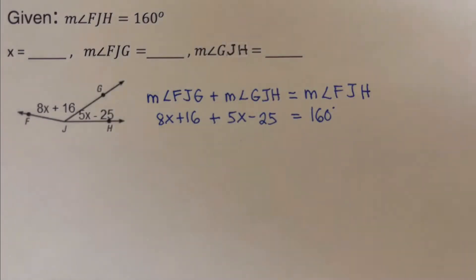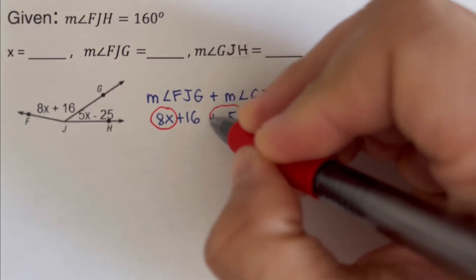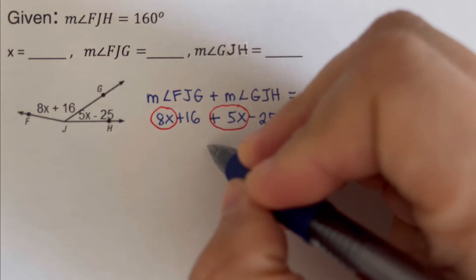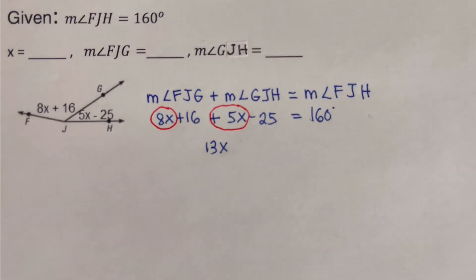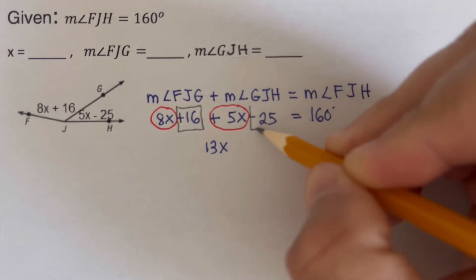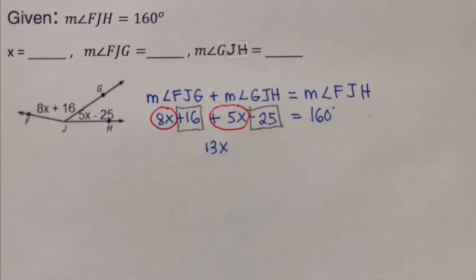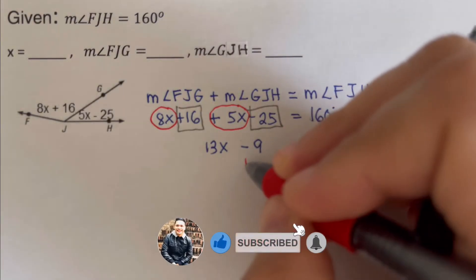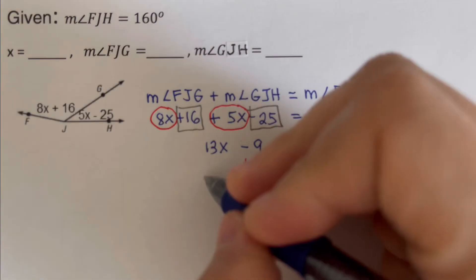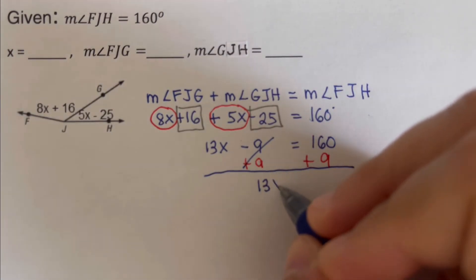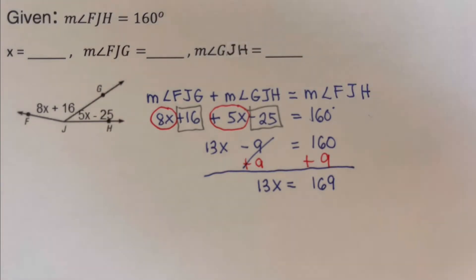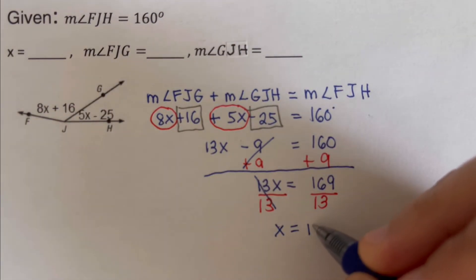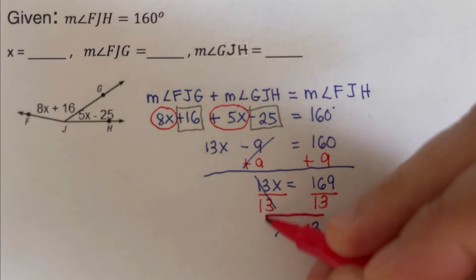We combine like terms: 8X plus 5X is 13X, and positive 16 minus 25 is negative 9. So 13X minus 9 equals 160. Adding 9 to both sides: 13X equals 169. Dividing both sides by 13, X equals 13.